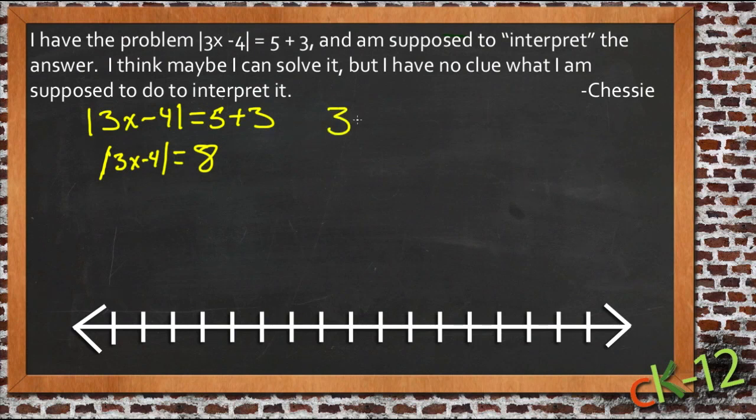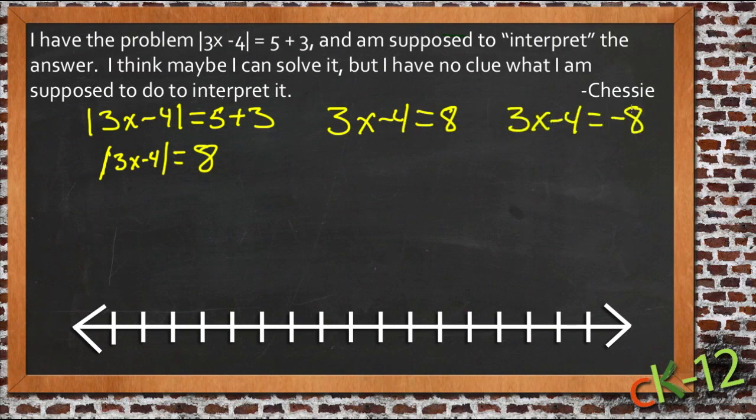So we can write the same statement here as two separate statements. We could say that 3x minus 4 is equal to 8, because then this 8 would be inside the absolute value symbols, and it would be equal to 8. Or 3x minus 4 is equal to negative 8, because if this was equal to negative 8, and we put it inside the absolute value symbols, it would still come out to be positive 8. So let's solve both of these possibilities and see what we come up with.